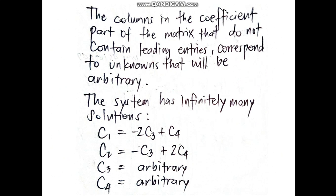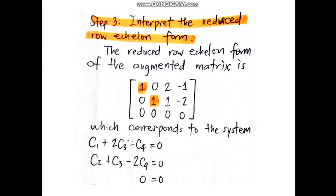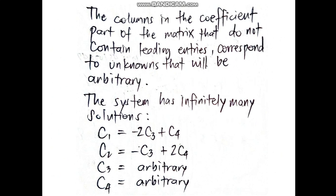The leading entries in the matrix have been highlighted. The leading entry in the i, j position indicates that the j unknown will be determined using the i-th equation. The columns in the matrix that do not contain leading entries correspond to unknowns that will be arbitrary.